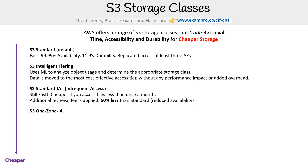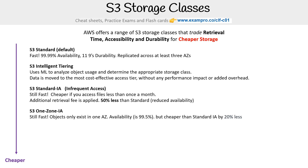Then you have S3 One Zone-IA. It's running in a single zone, so it's as fast as S3 Standard, but it's going to have lowered availability — though you'll save money. The caveat is your data could get destroyed because it's remaining in a single AZ. If that AZ or data center suffers a catastrophe, you're not going to have a duplicate of your data to retrieve.